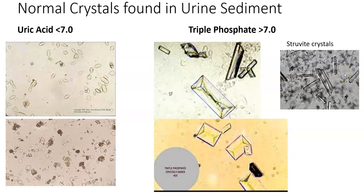Struvite crystals are ammonium magnesium phosphate crystals and are not terribly common in humans — we don't see them clinically very often. We do see them quite often in dogs. They can look like triple phosphates, but since they're both normal crystals, if you call a struvite crystal a triple phosphate crystal, it's not going to cause a clinical problem.